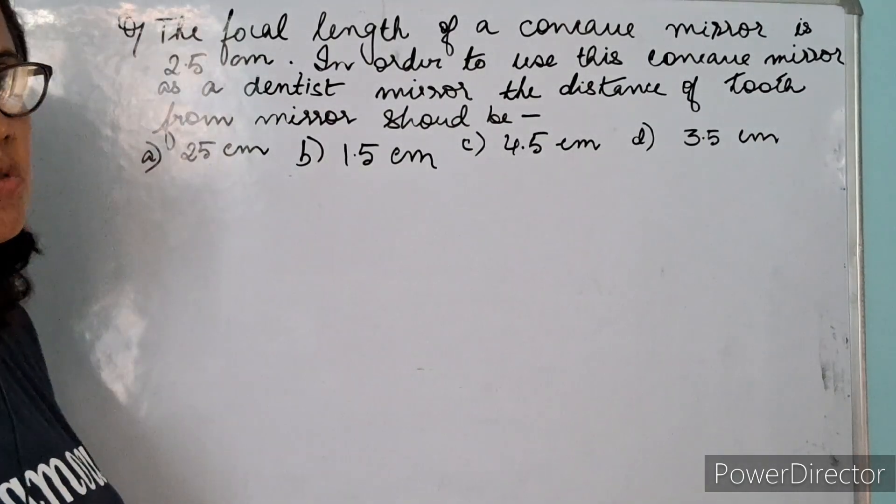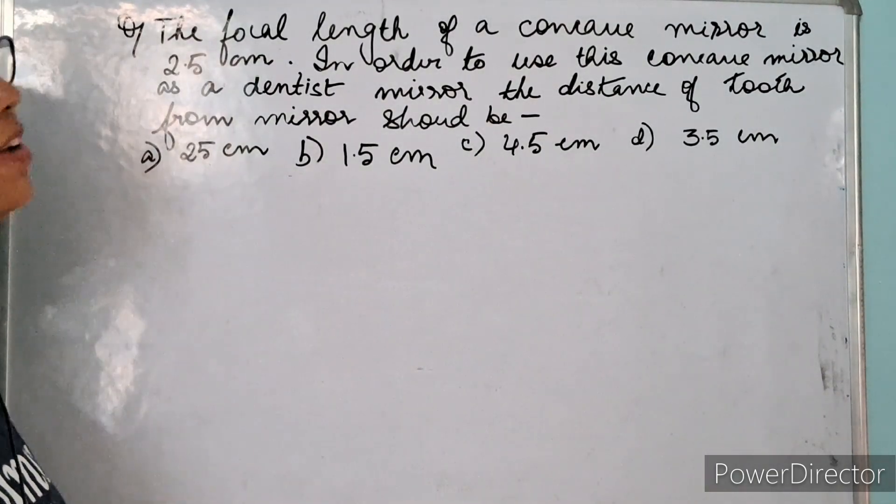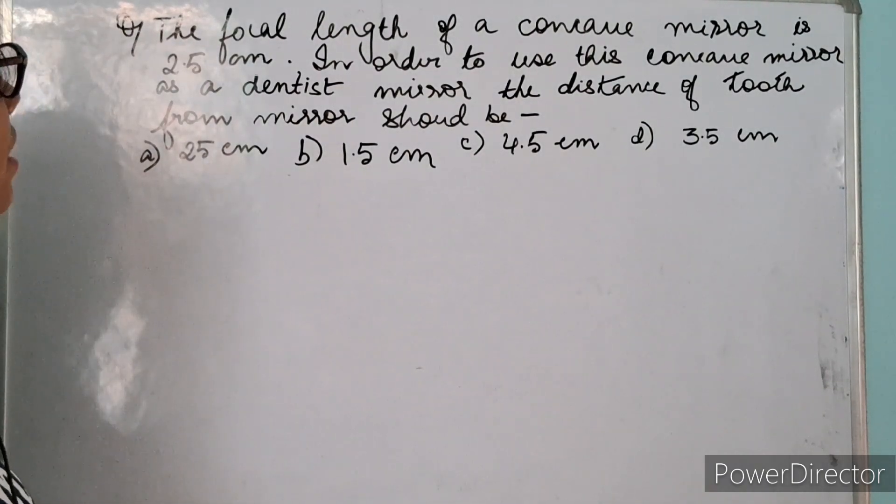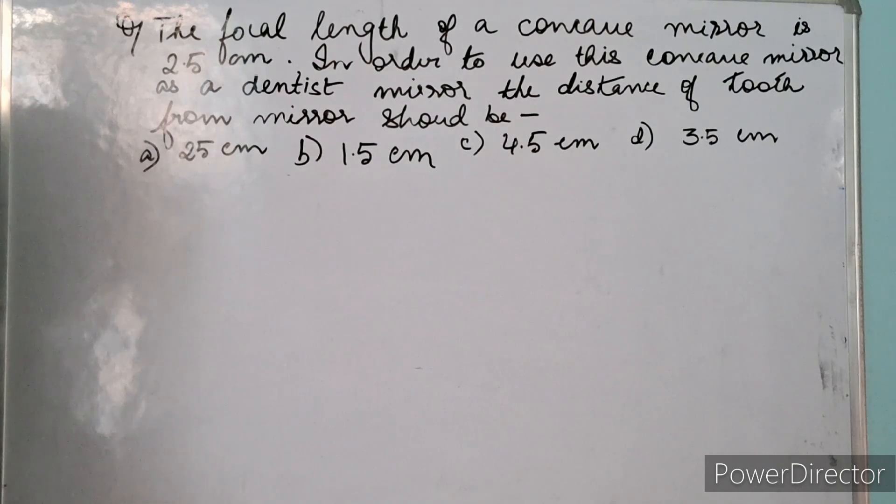In this video, let us try to solve this question from the chapter reflection of light for class 10. Let us read the question first. The focal length of a concave mirror is 2.5 cm.